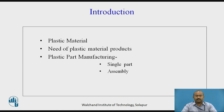In the introduction, let us look at plastic material, the need for plastic material products, and plastic part manufacturing in various categories — single part and assembly. For designing any product or assembly, the first stage is selection of material. When comparing materials, we compare their optimized and advantageous properties. Plastic materials have distinct positive properties like being easily moldable, a poor conductor of electricity, and corrosion resistant.